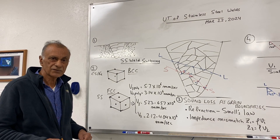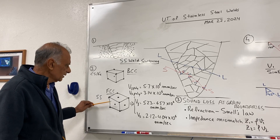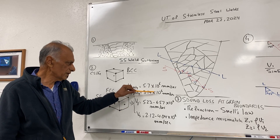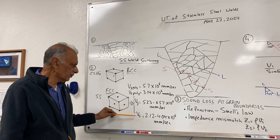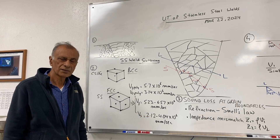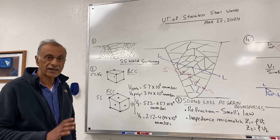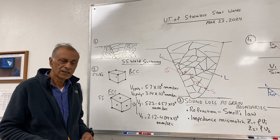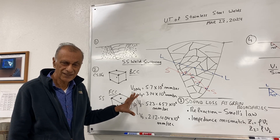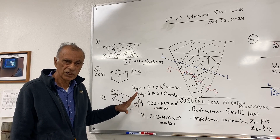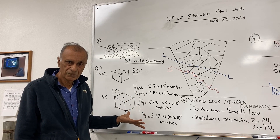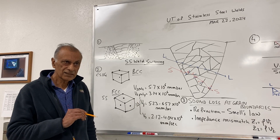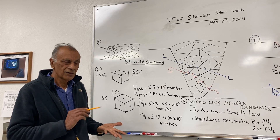The effect of the FCC lattice structure on the shear wave is significantly higher than on the L-wave, and that makes the whole difference for stainless steel weld inspection. In the extreme case, the shear wave velocity — generally 3.14 × 10⁶ mm/s — can vary from 2.12 to 4.04 × 10⁶ mm/s. The effect on the L-wave is much less, varying only from 5.23 to 6.57 × 10⁶ mm/s. In reality, the shear wave velocity will vary by about 25% while the L-wave is affected by only about 5%.